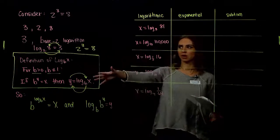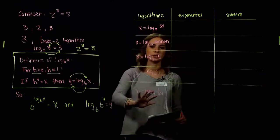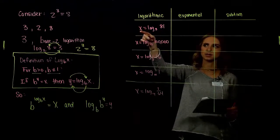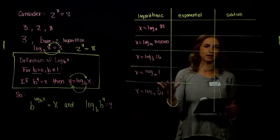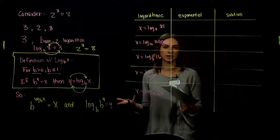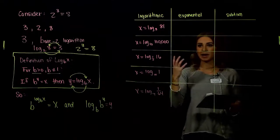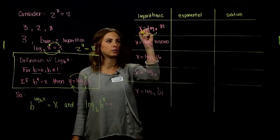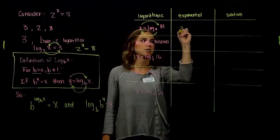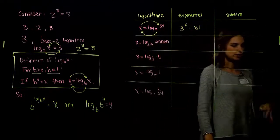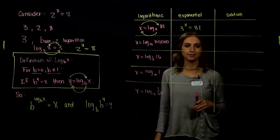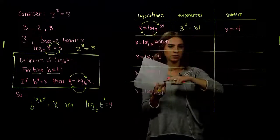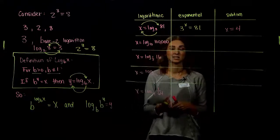Let's solve logarithmic equations by converting to exponential form. For log base 3 of 81: converting gives 3^x = 81. What power gives us 81? 3×3=9, ×3=27, ×3=81, so x = 4. For log base 10 of 100,000: 10^x = 100,000. We need 5 factors of 10, so x = 5. It's much easier to see by hand once it's in exponential form.